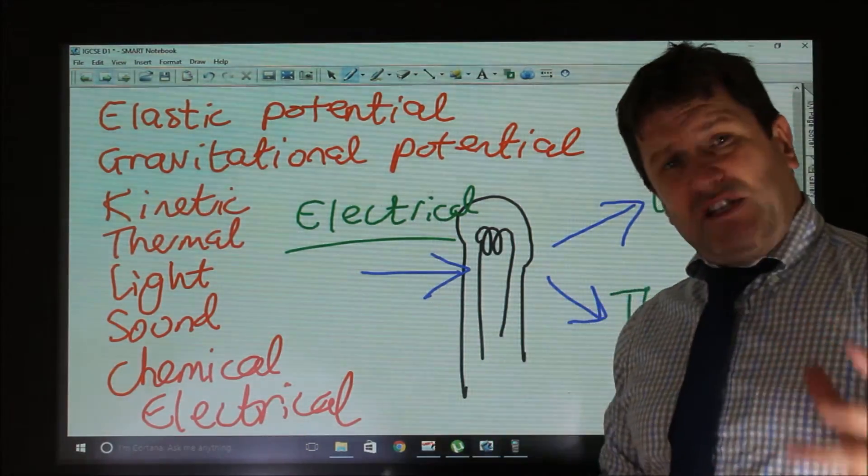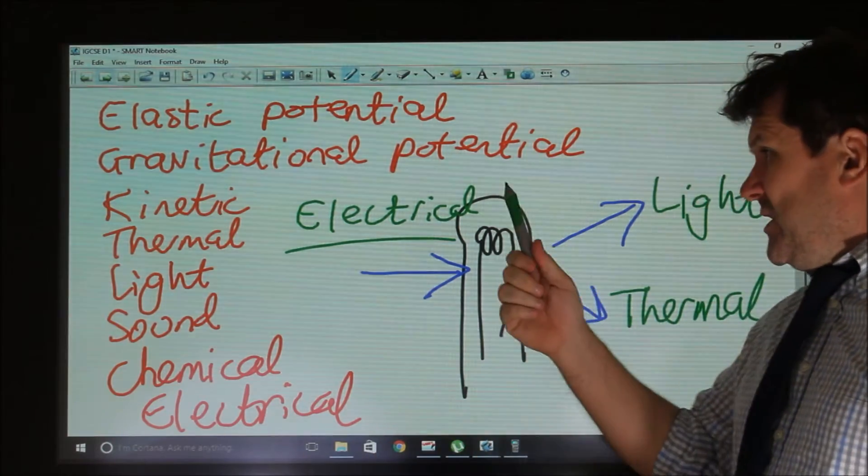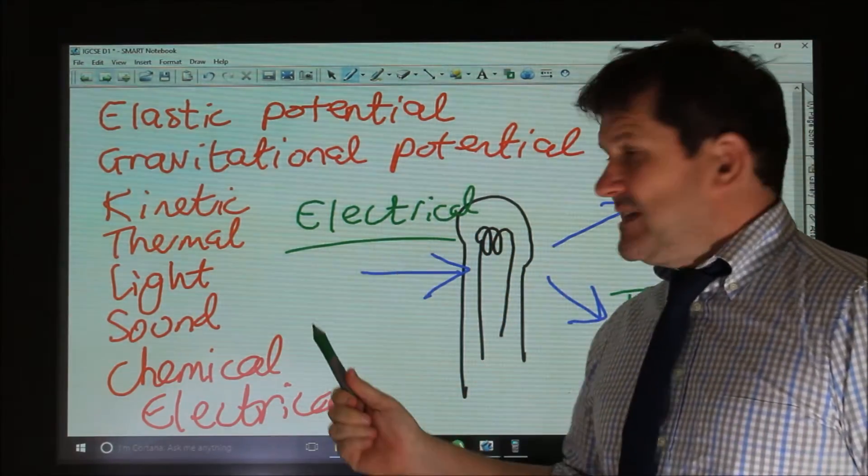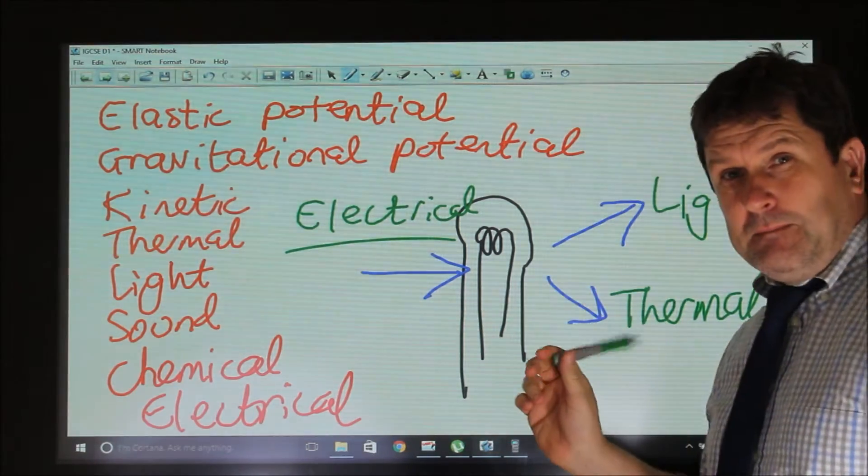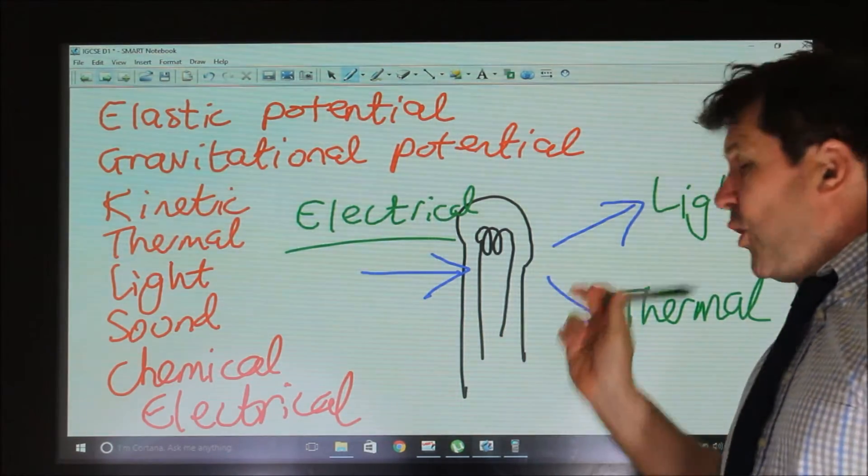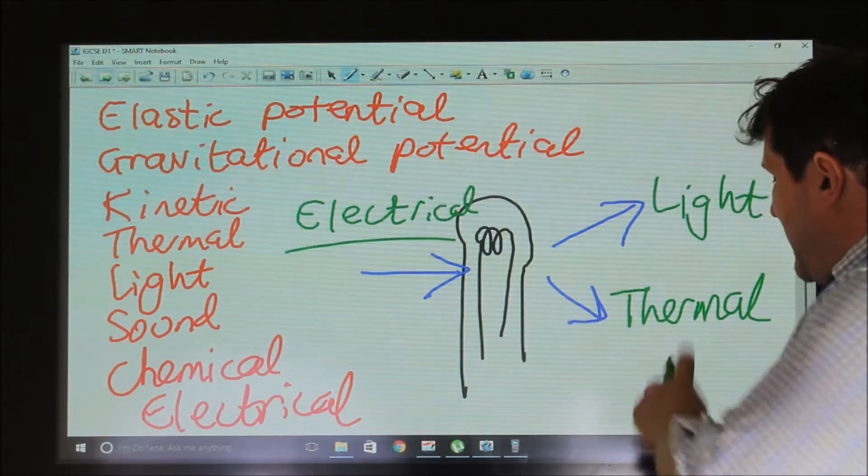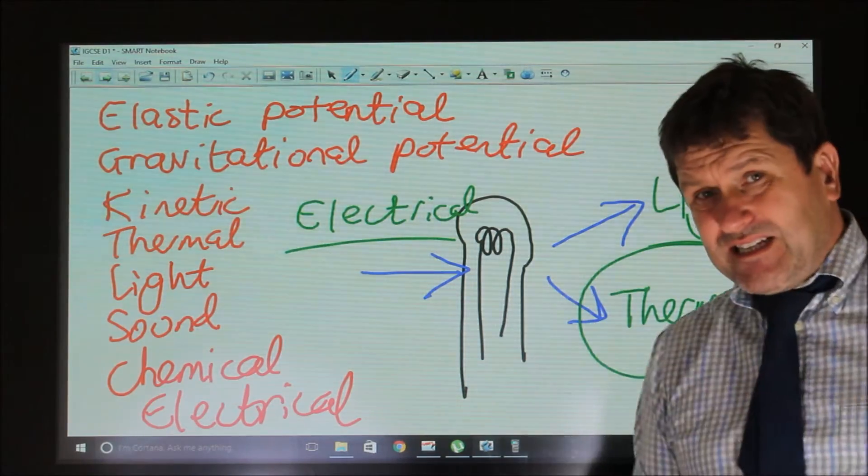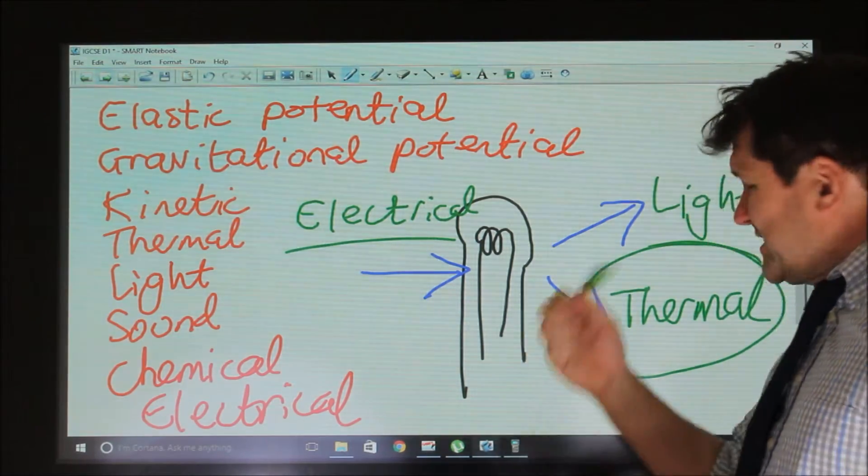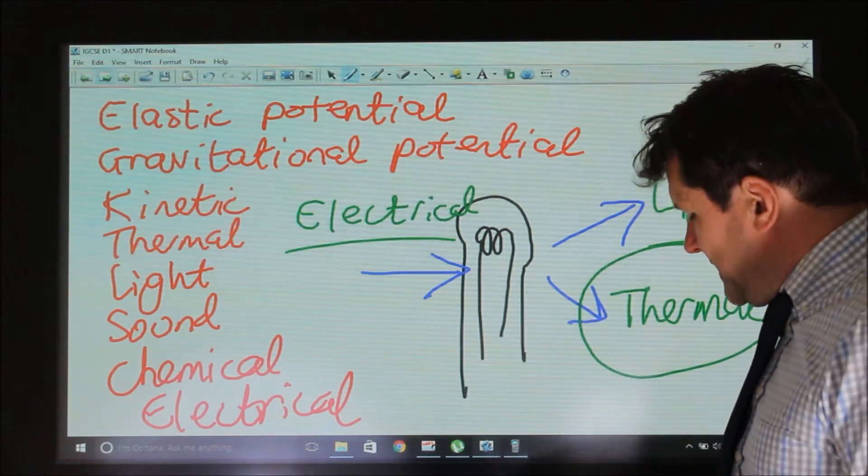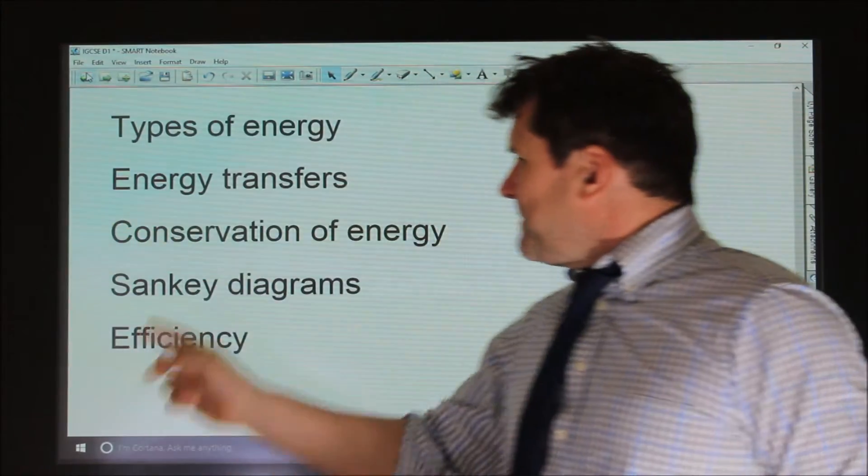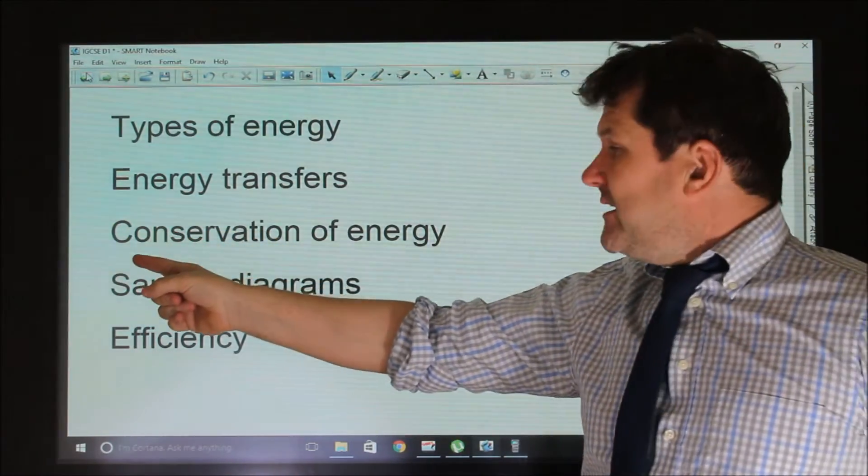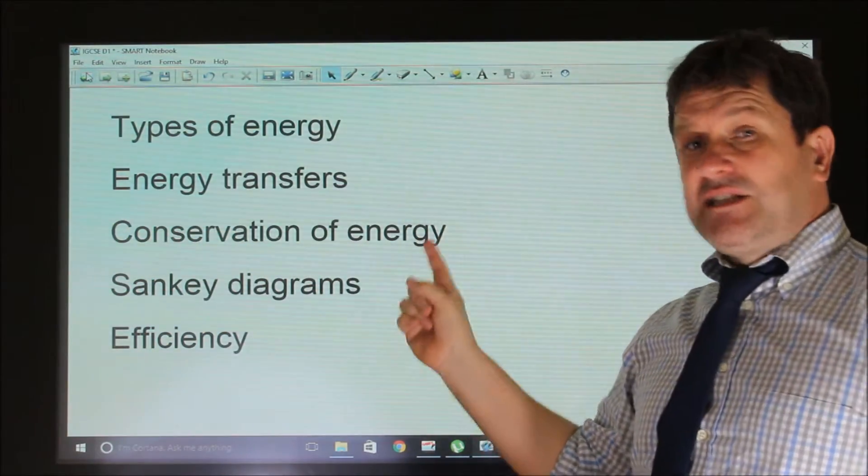So when we think about every machine in the world, all that it's doing is it's transferring energy from one type into another. But when it does that, it always creates energy which is wasted. And that energy which is wasted is often thermal. And what's interesting to remember is, when we look at this, the energy that goes in is always equal to the energy that comes out.